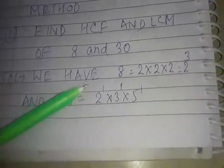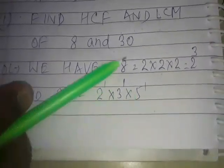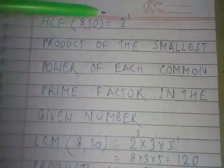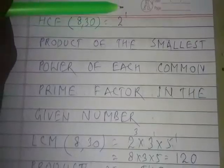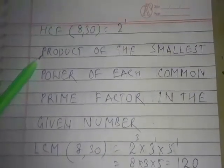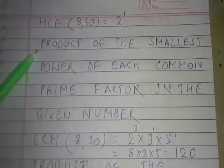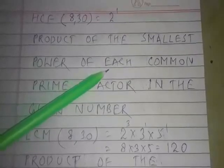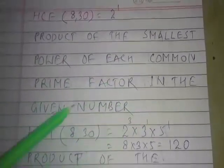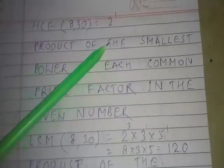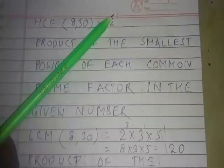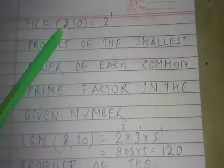And 30 equals 2¹ × 3¹ × 5¹. Now, HCF of 8 and 30 equals 2¹. How does 2¹ come? It is the rule for finding HCF using prime factorization: take the product of the smallest power of each common prime factor in the given numbers. We see that 2 is the only common factor, and its smallest power is 1. Therefore, HCF of 8 and 30 = 2¹ = 2.